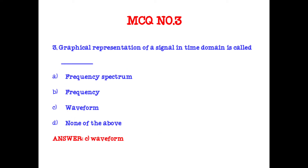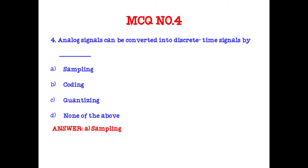Graphical representation of a signal in the time domain is called a waveform. A waveform shows changes in amplitude over a certain amount of time. So the graphical representation of a signal in the time domain is called waveform.